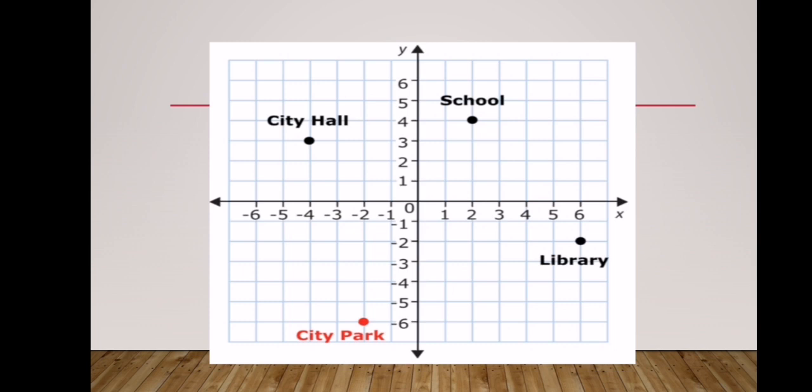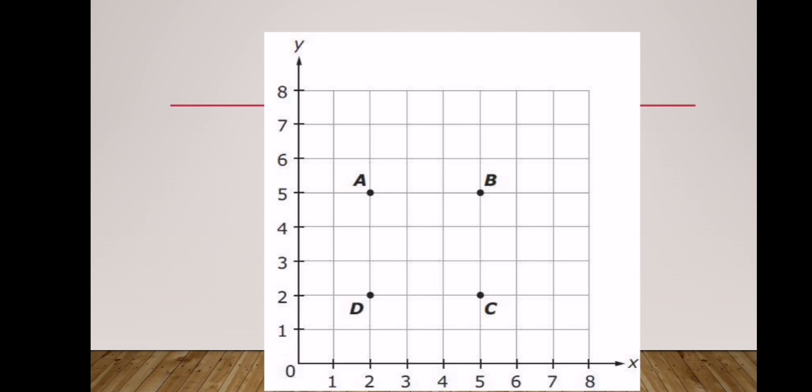Similarly, to reach city park, starting from the origin you move two places towards the left, so your x-coordinate is -2. Then you move vertically downward six places to reach city park. So the coordinates of city park are going to be (-2, -6), and once again you write these coordinates within parentheses or brackets.